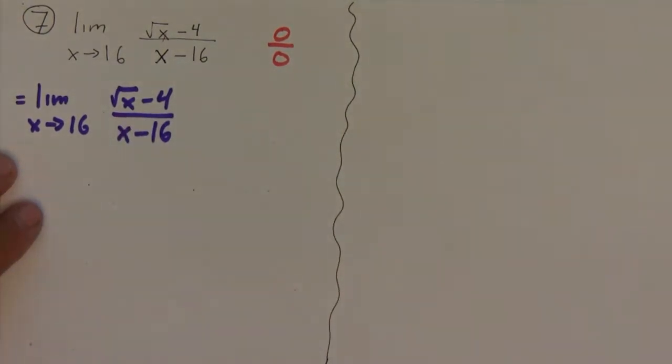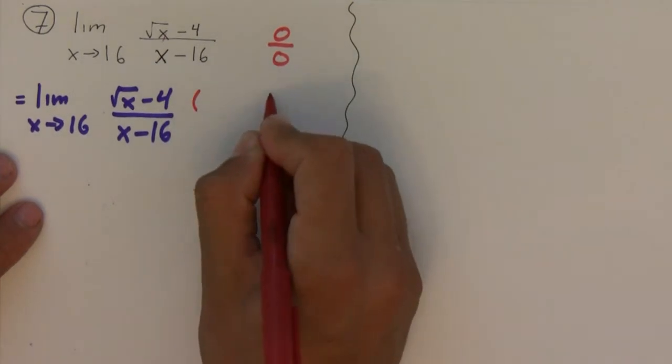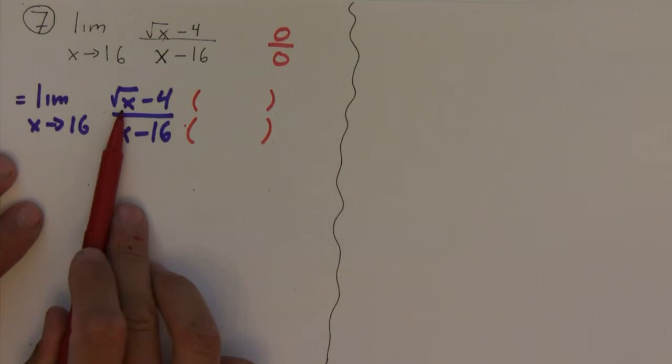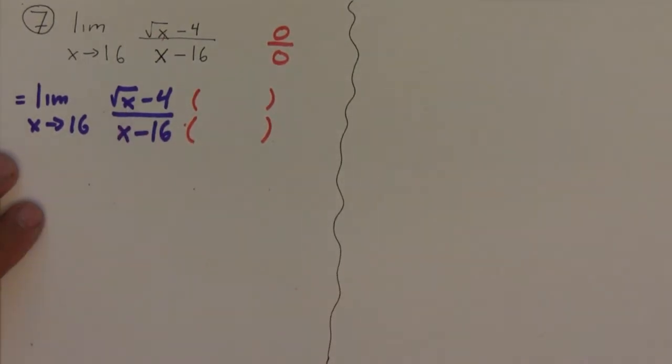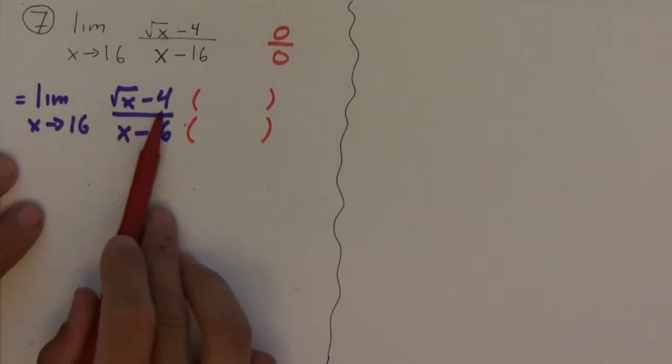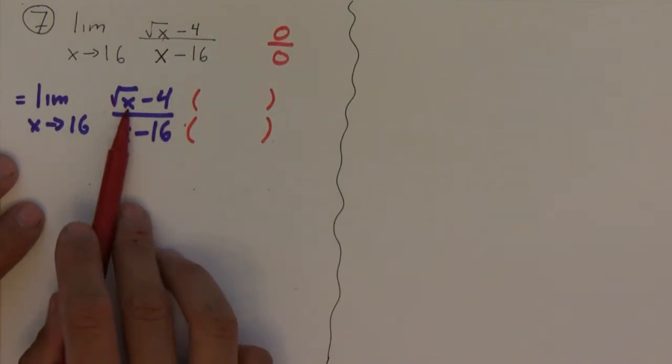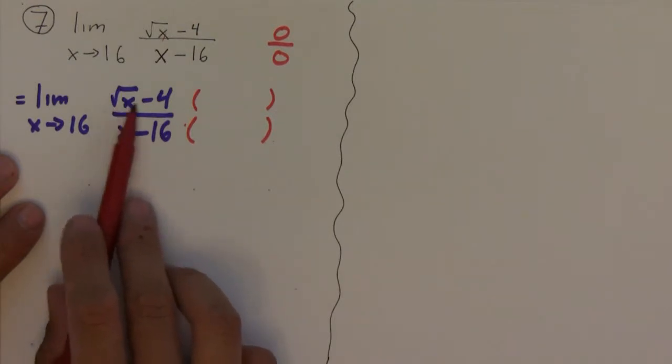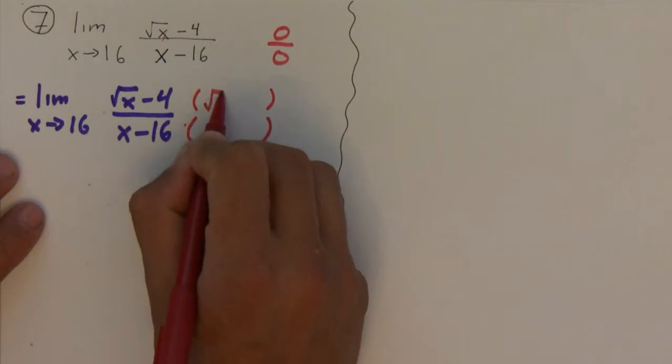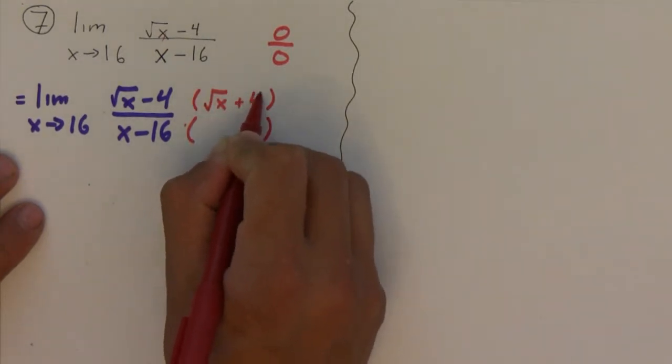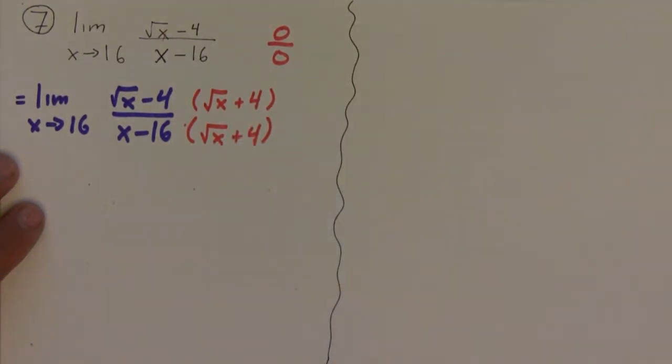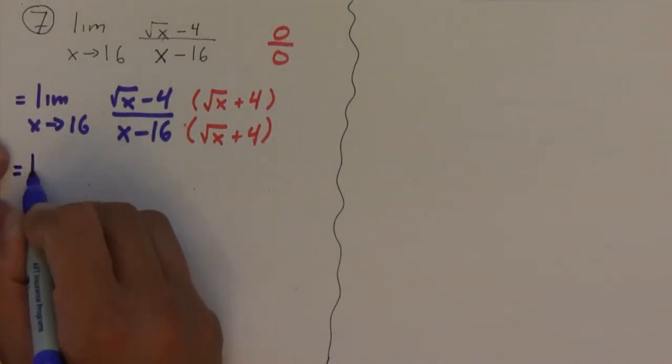This is a little algebra trick that you can use when you have situations like this, and this sort of trick works usually when you have square roots in your limit. So what you're going to do is multiply numerator and denominator by the conjugate of the numerator or the denominator, whichever one has a square root. In this case, I'm going to multiply by square root of x plus 4 because the square root is in the denominator. Now you have to be careful in that you only want to